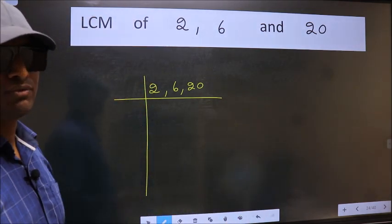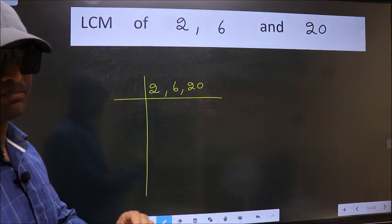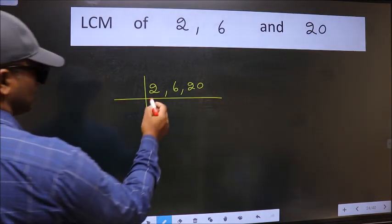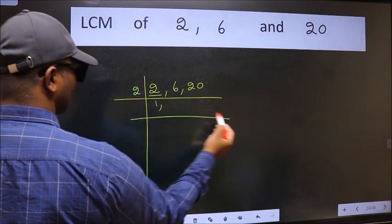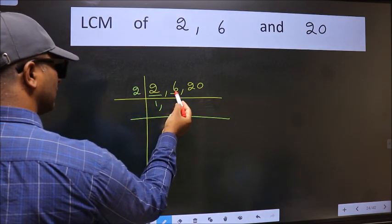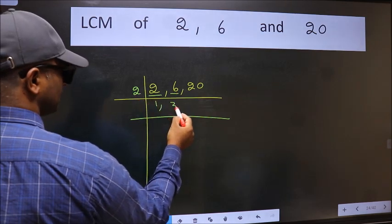Now we should focus on the first number which is 2 here. 2 is a prime number so 2, 1 is 2. The other number 6, when do we get 6 in 2 table? 2, 3 is 6.